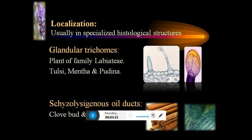Localization: usually, volatile oils are present in specialized histological structures. They are present in secretory trichomes of plants of families like Pinaceae.